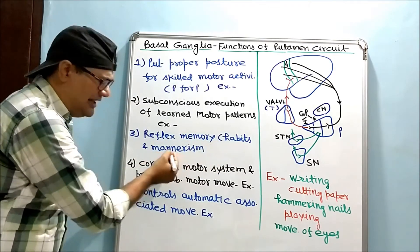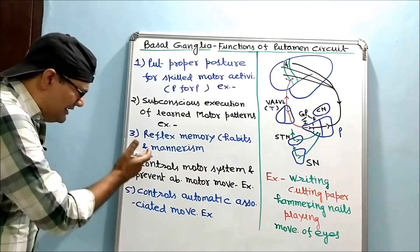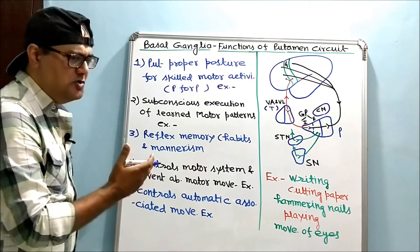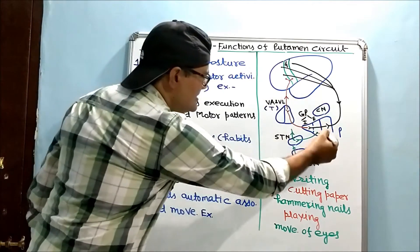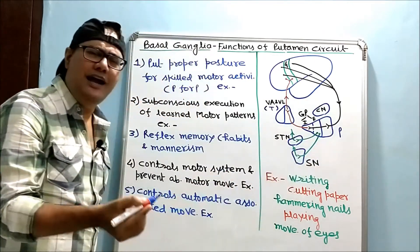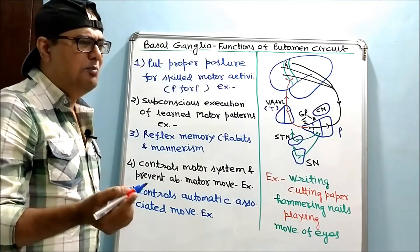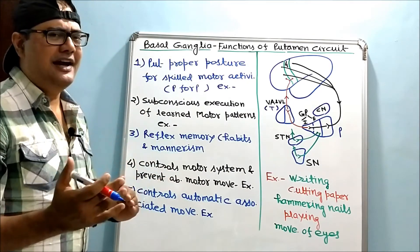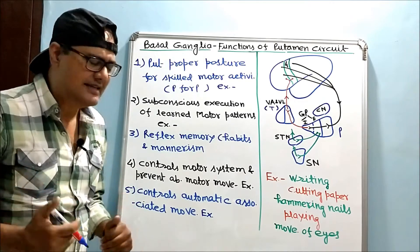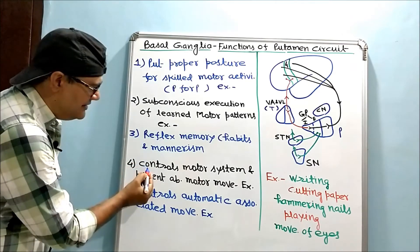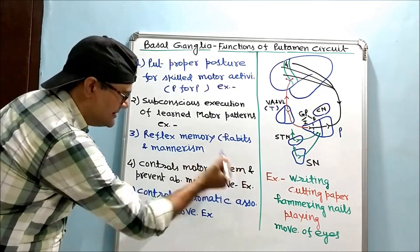All our habits, mannerisms, and all. The other two functions are related to clinical findings. When basal ganglia nuclei are lesioned, abnormal hyperkinetic or sometimes hypokinetic movements begin. This means putamen circuit is controlling motor system.